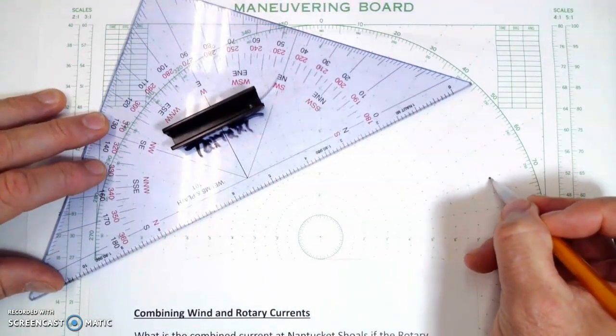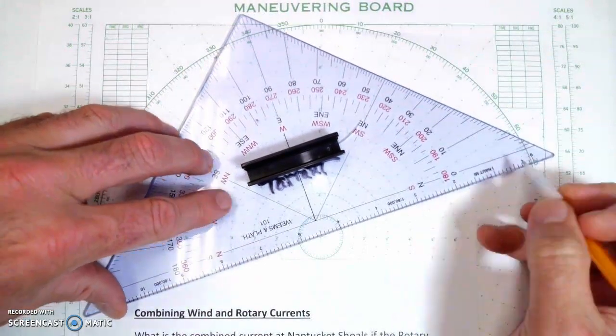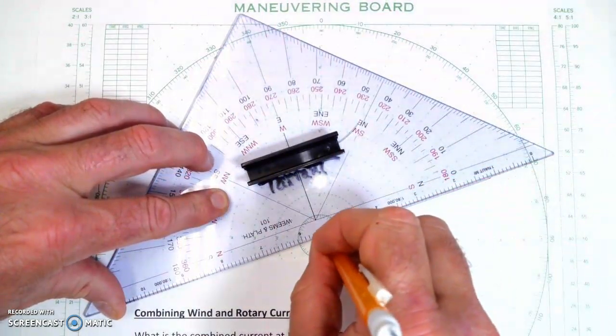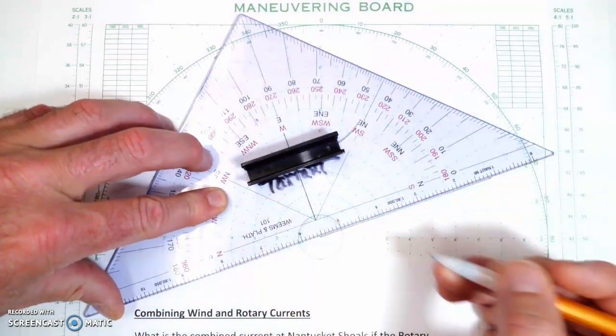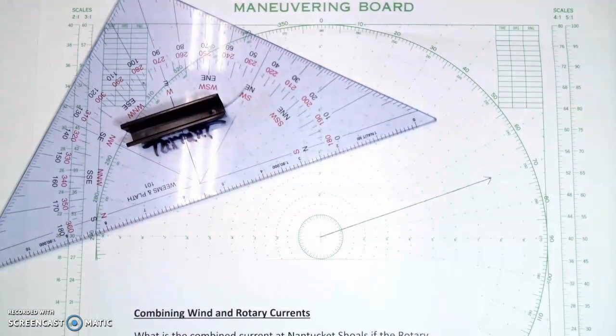So I can just, I'm going to draw my current in now. And there's that, just right along that line. Great. So that is the direction of the first current.